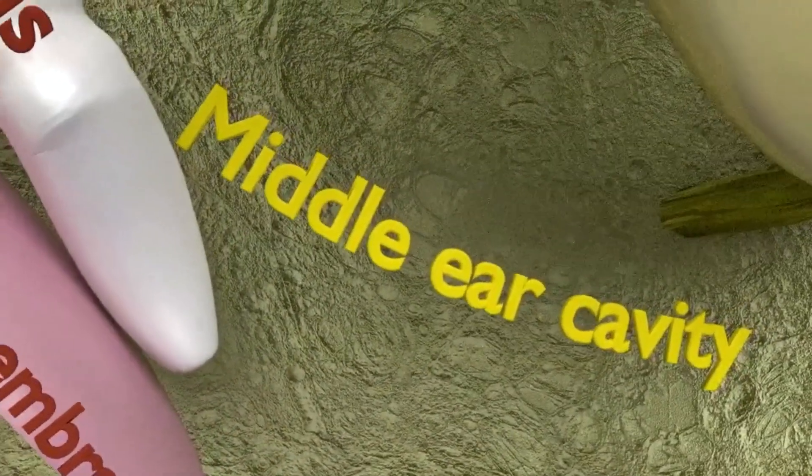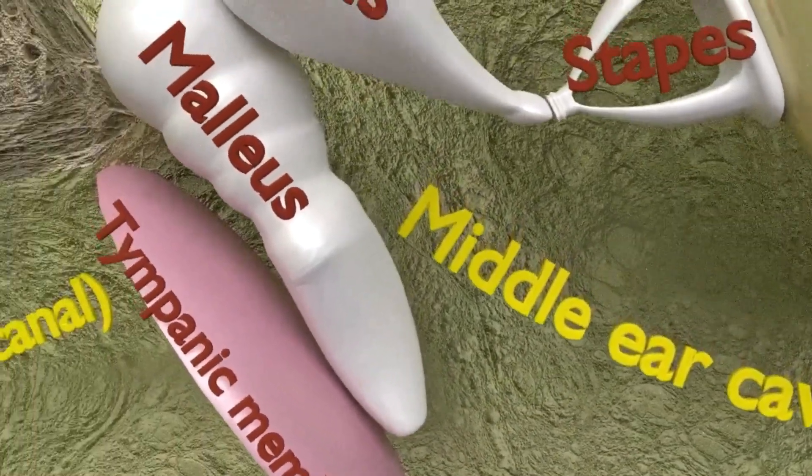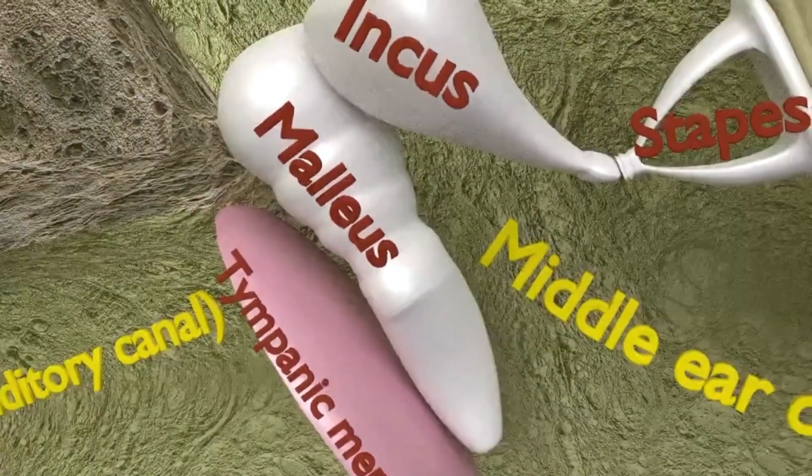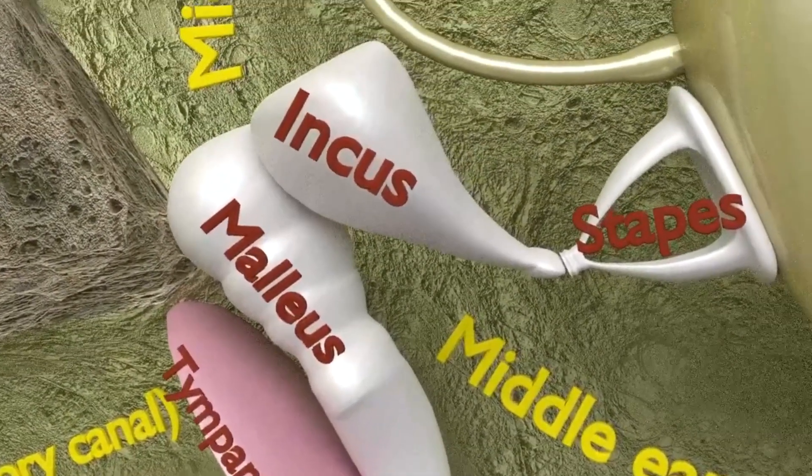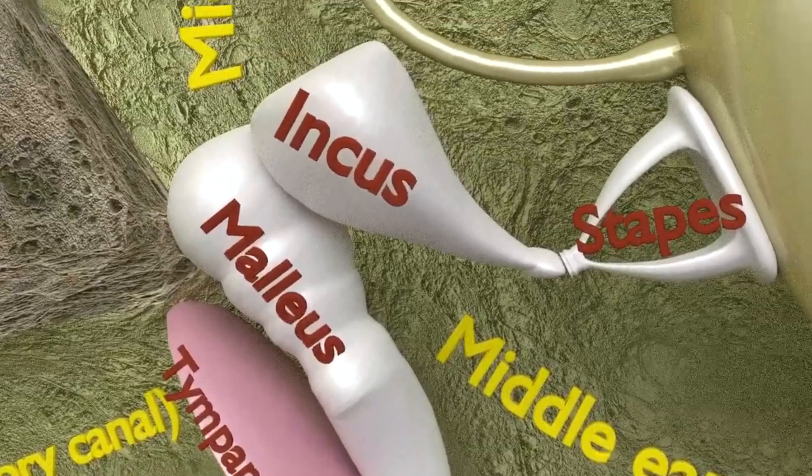The middle ear consists of an air-filled cavity called the tympanic cavity, and this includes the three bones and their attaching ligaments, the auditory tube, and the oval window.